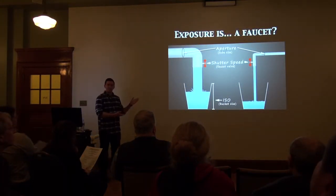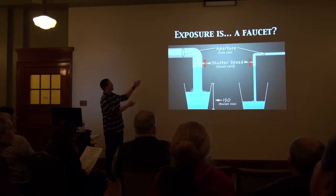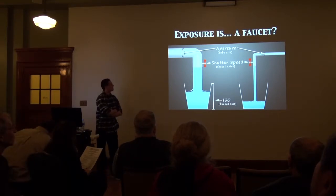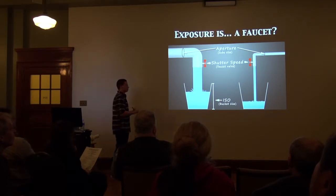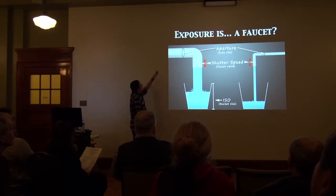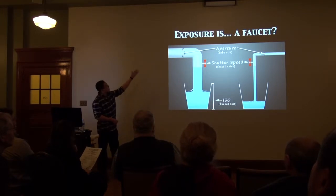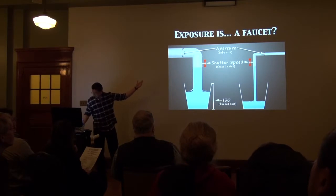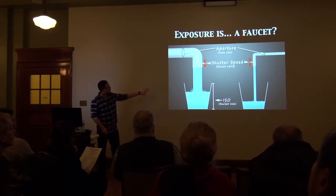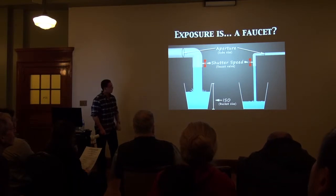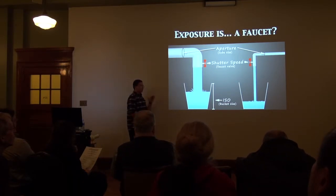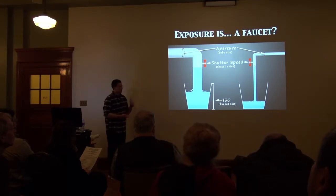Exposure is a faucet. I can't really take credit for this analogy — I just learned about it recently — but I thought this was a very interesting way of thinking about photography and exposure. Aperture is the size of the tube, so the more water that's let through, you obviously have to have a bigger tube for that. Once the bucket is full, you have a perfect exposure. The shutter speed is the valve of the faucet, which determines how long you're letting water through into the bucket. And ISO is the size of the bucket — the smaller the bucket, the quicker it fills up and you get a perfect exposure.